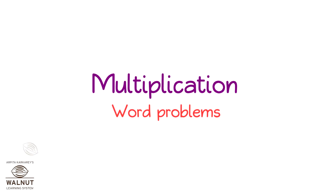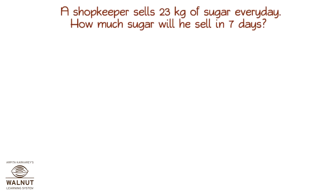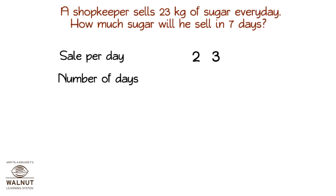Multiplication Word Problems. Let us try some word problems on multiplication. A shopkeeper sells 23 kgs of sugar every day. How much sugar will he sell in 7 days? We have the sale per day, i.e., 23 kgs, and the number of days, i.e., 7. We know how to multiply a two-digit number by one digit.